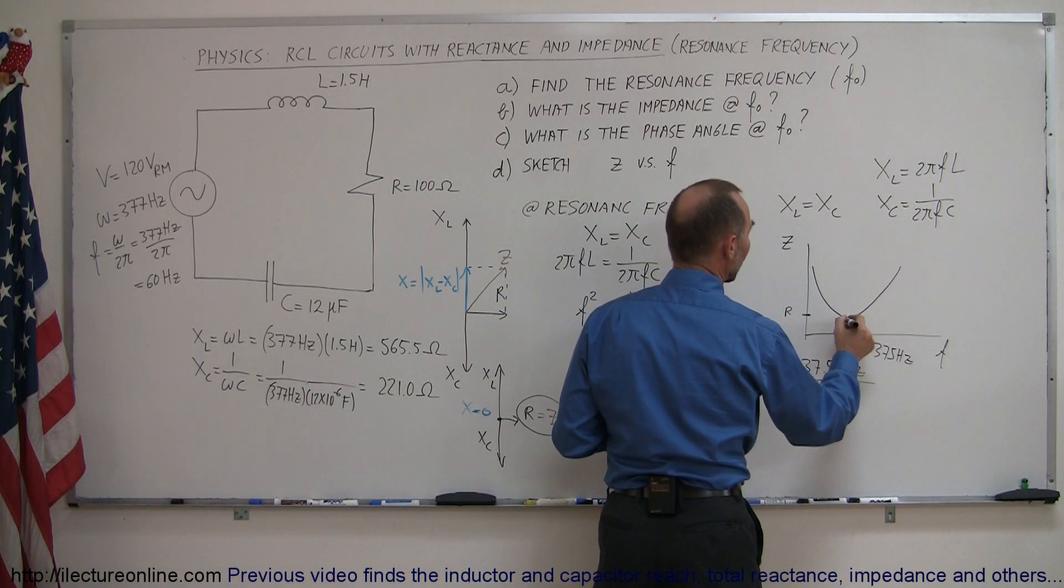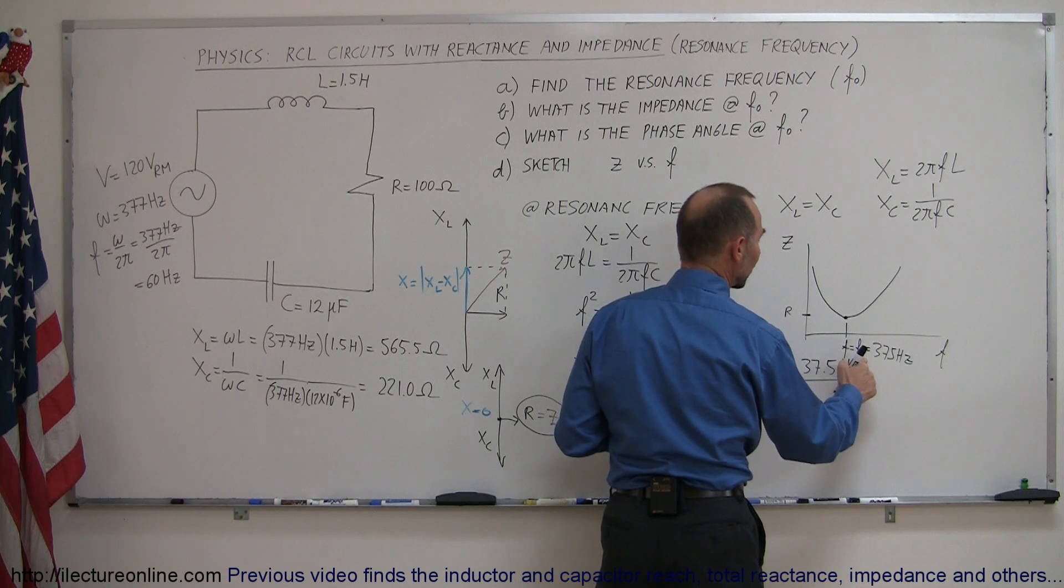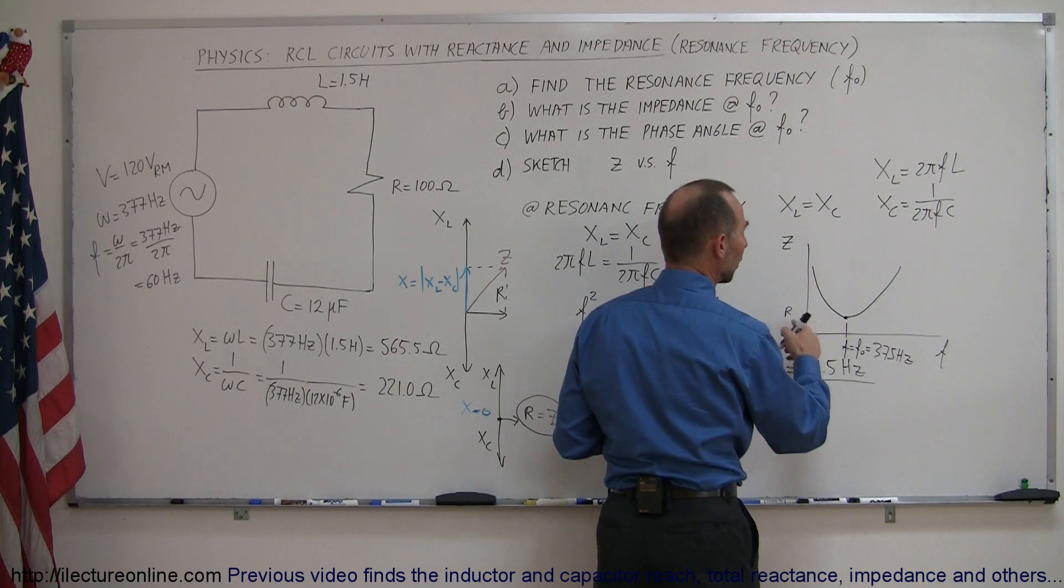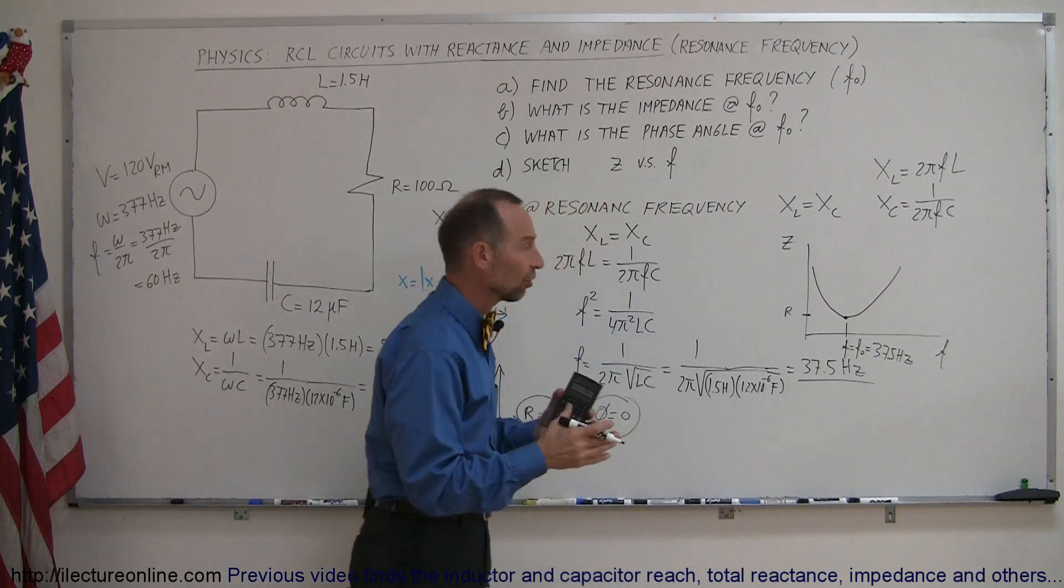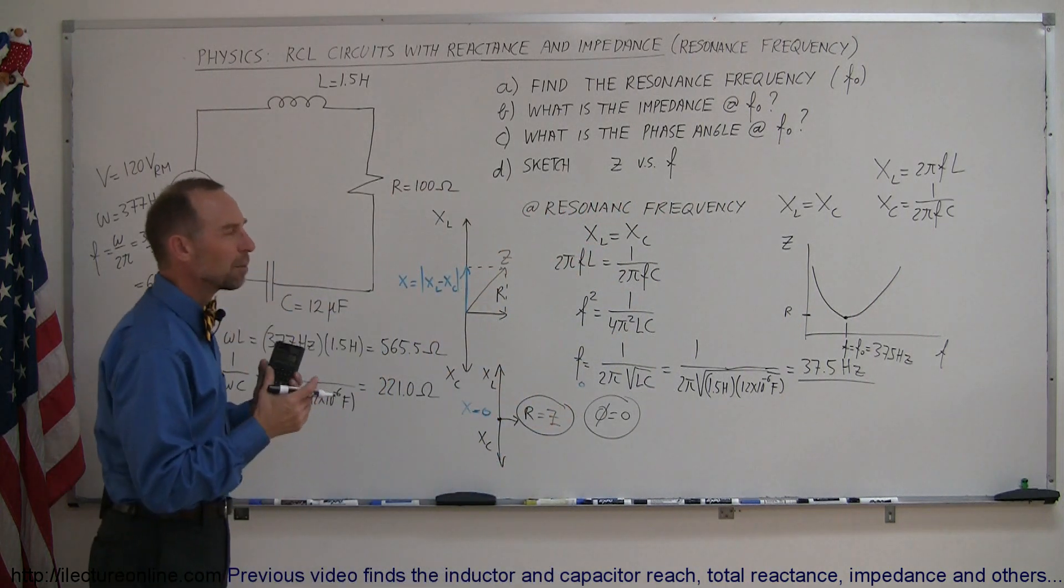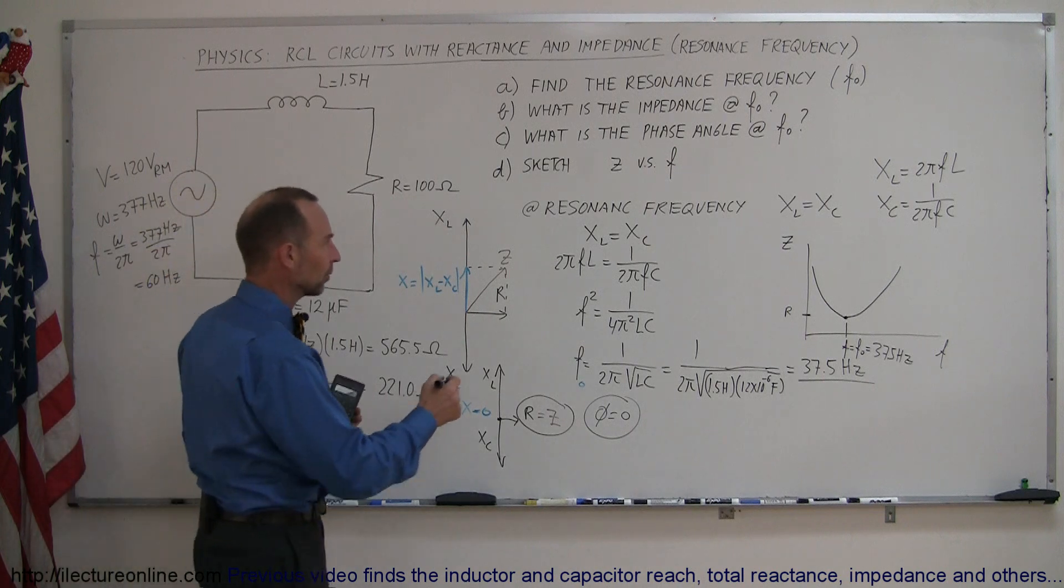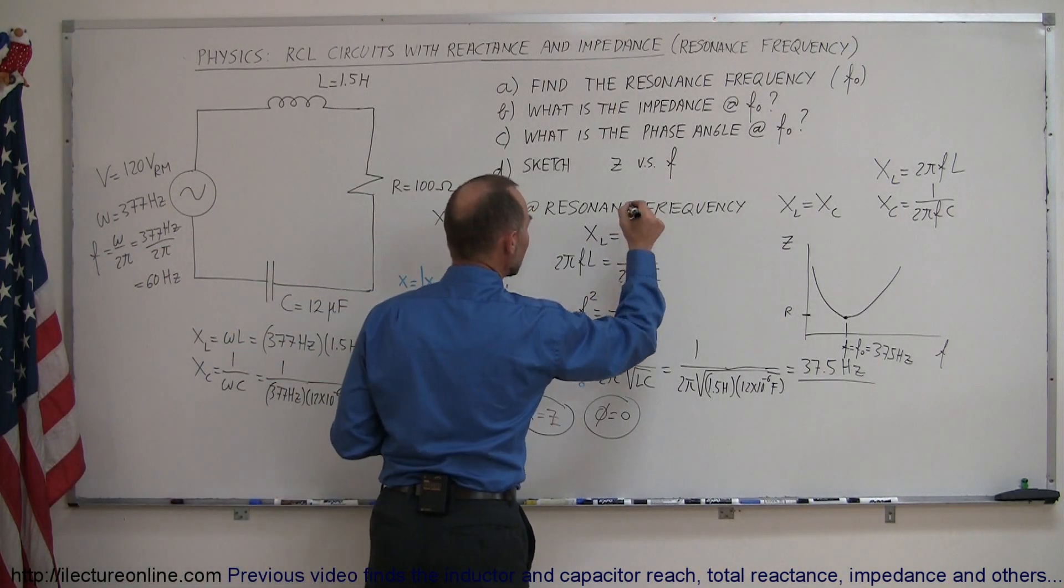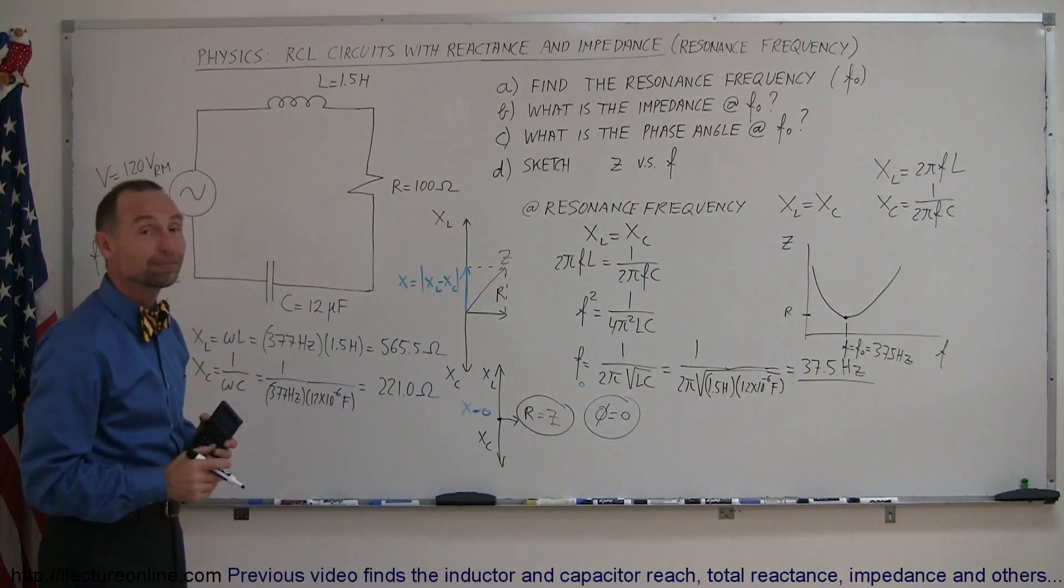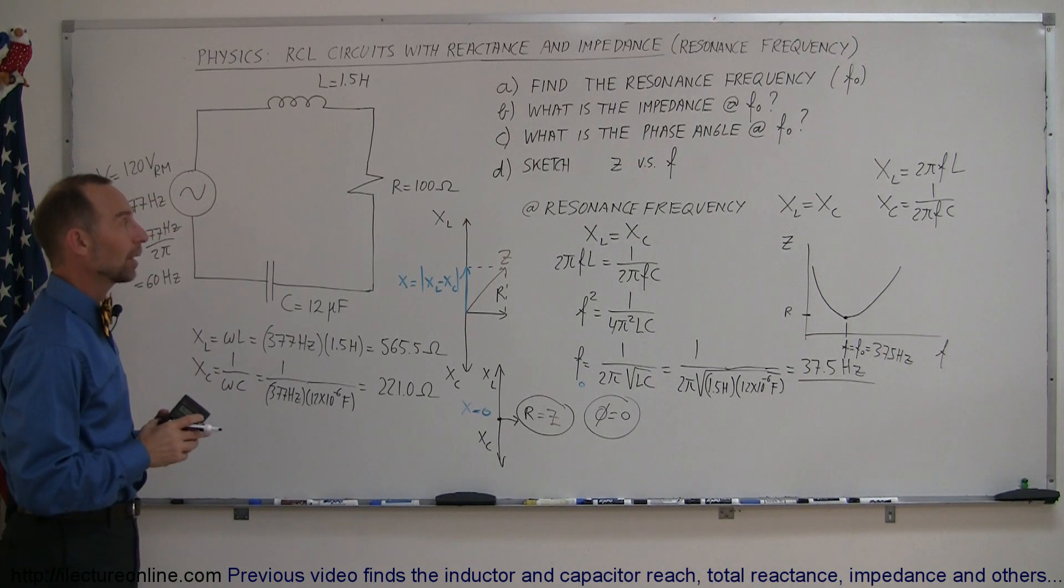So what that means is at the point where the frequency equals the resonance frequency, when Z becomes equal to R, then the overall impedance of the circuit is the smallest it can be, and that's what we mean by a resonance circuit or a resonance frequency. Alright, that is how you do a problem like this.